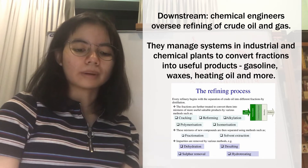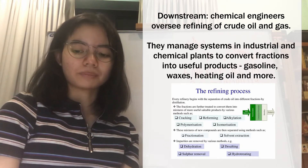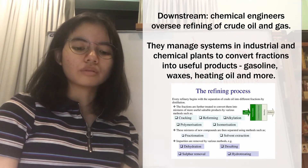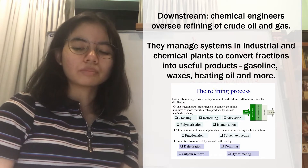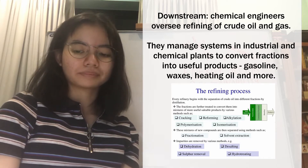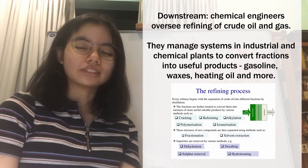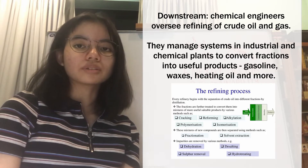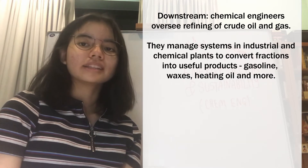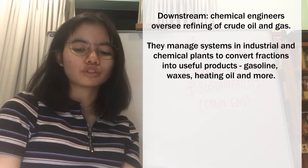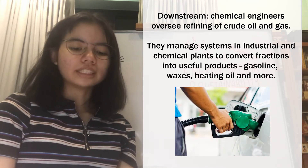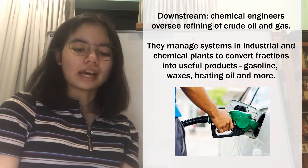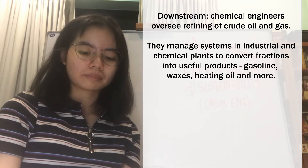These mixtures of new compounds are then separated using methods such as fractionation and solvent extraction. Impurities are also removed by various methods like dehydration, desalting, sulfur removal, and hydro-treating. For a more detailed look into these processes, I have linked a resource in the description below. The downstream sector reaches consumers through products such as gasoline or petrol, kerosene, jet fuel, diesel oil, heating oil, and etc., as well as hundreds of petrochemicals.